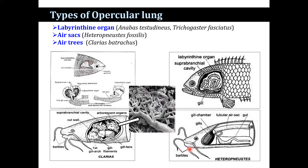In Heteropneustes fossilis, the respiratory organ consists of a pneumatic sac or air sac, gill plate, and respiratory membrane. A pair of simple sac-like structures extend posteriorly from the suprabranchial chamber up to the middle of the caudal region. The air sacs are thin-walled, long tubular structures which are highly vascular and embedded between the myotomes of the body. The air sacs receive blood from the fourth afferent branchial vessels. The respiratory membrane lining the air sac is thrown into folds and ridges and is composed of vascular areas known as respiratory eyelids, which are the actual sites for gaseous exchange.